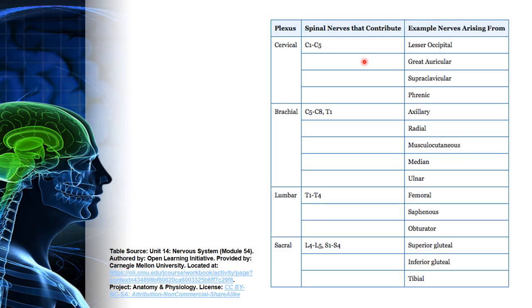This is an additional reference from an open learning initiative at Carnegie Mellon University. It highlights most of the plexi and the spinal nerves that contribute. The cervical plexus has C1 through C5. You don't need to memorize all of these, but know the phrenic nerve coming from the cervical plexus at C1 through C5. Know the axillary, radial, and ulnar nerves at the brachial plexus at C5 through C8, also branching at T1. The lumbar plexus for the femoral nerve is around T1 through T4, and components of the sciatic nerve branch off at L4 through L5 and S1 through S4.